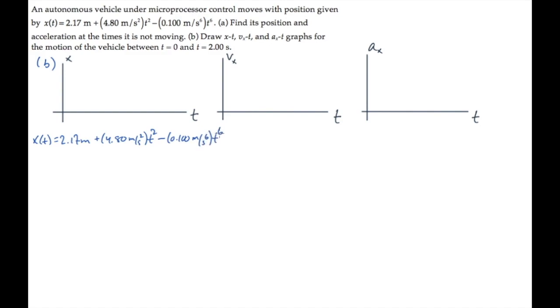The position equation is given here, copying it from the problem statement. At time t equals zero, we can substitute that value to find the position as 2.17 meters, and we can put some other marks here to calculate positions every half a second, up to two seconds. Substitute t equals 0.5 seconds into the expression to find out the position there is 3.37 meters. So we'll mark that here. And then substitute one second, and you get this value plotted here.